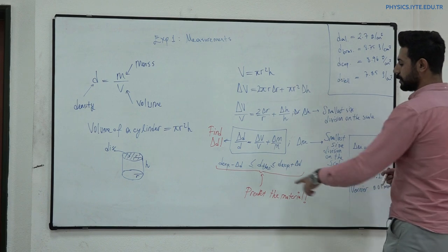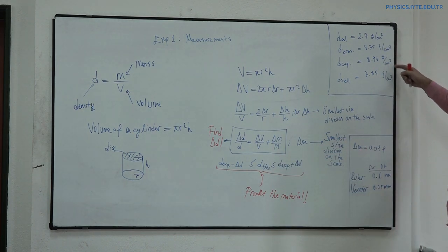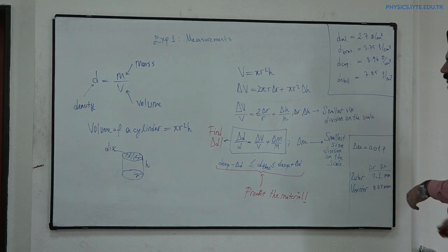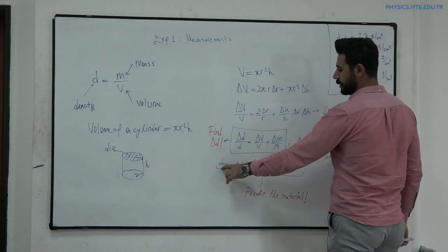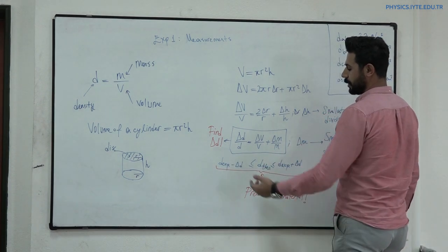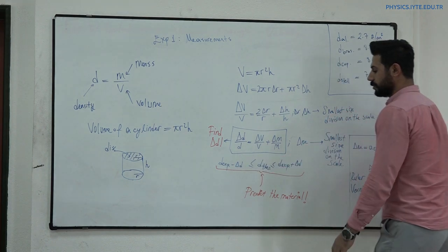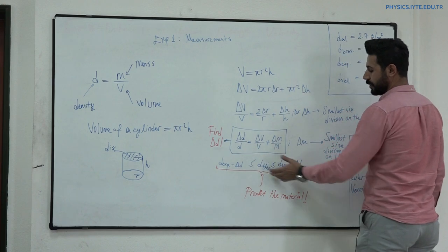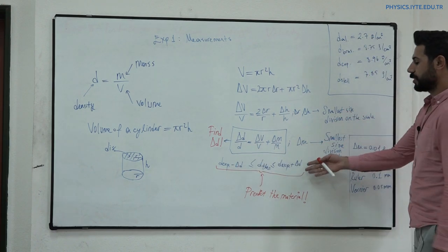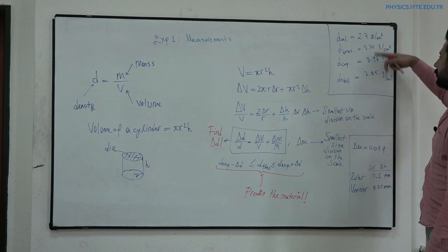As you know, the theoretical density values are given here for a set of materials. When you calculate the experimental D and delta D, you have to find an equation like this, and then you can choose the material from this table.